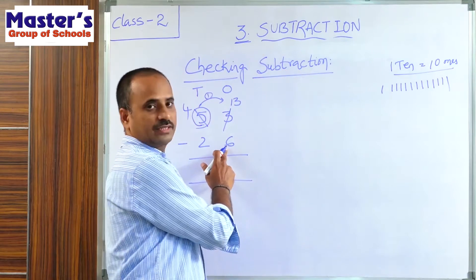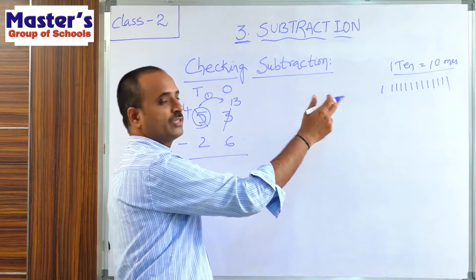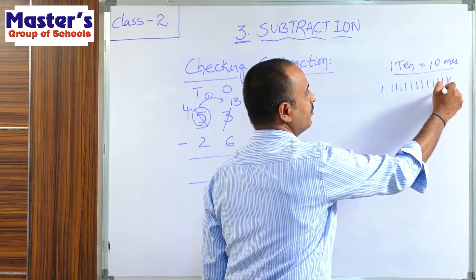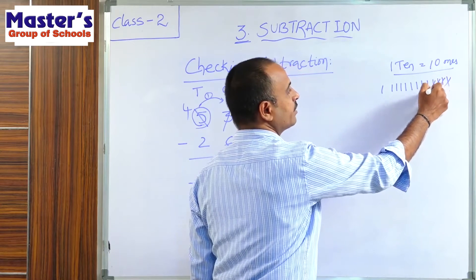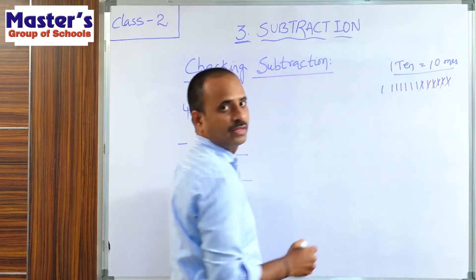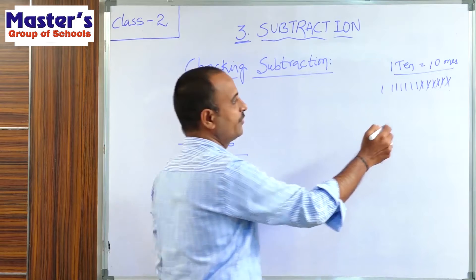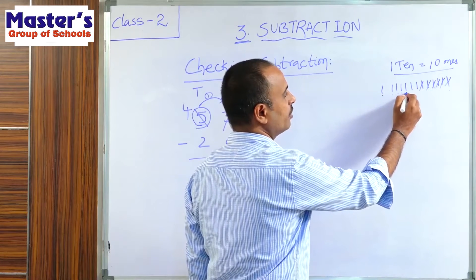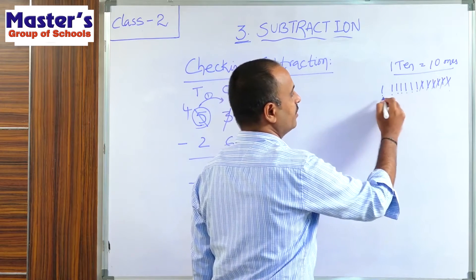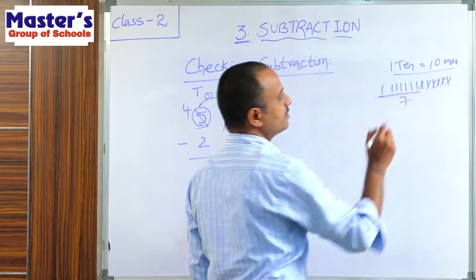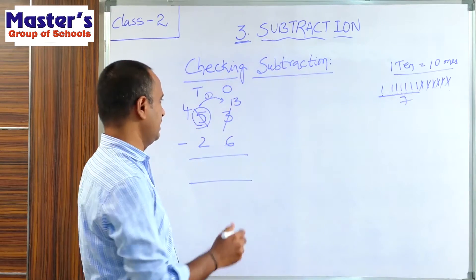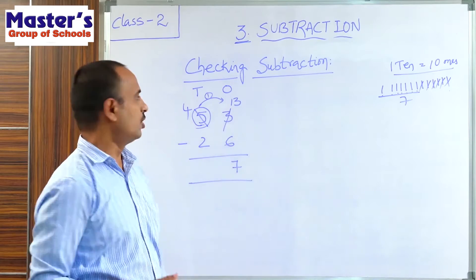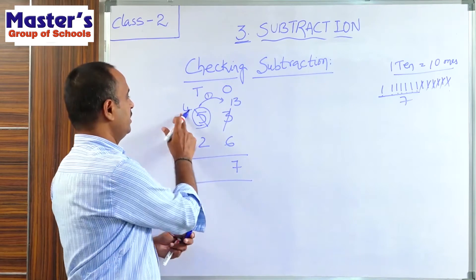The second number is 6, so strike out 6 lines from these 13 lines: 1, 2, 3, 4, 5, 6. Count how many lines are left: 1, 2, 3, 4, 5, 6, 7. So the answer is 7. Write 7 under the 1's place.